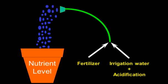It's important to remember that the nutrient levels you get in your water-soluble fertilizer solution are a combination of the fertilizer, the irrigation water, and the acidification. All three of those factors influence nutrient levels.